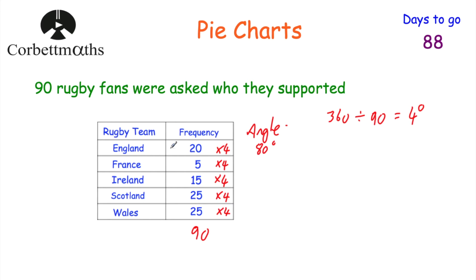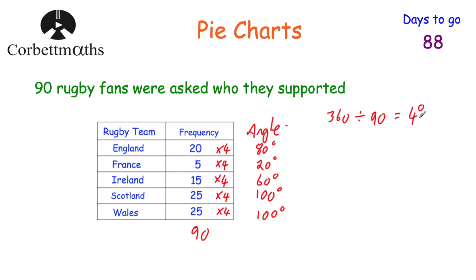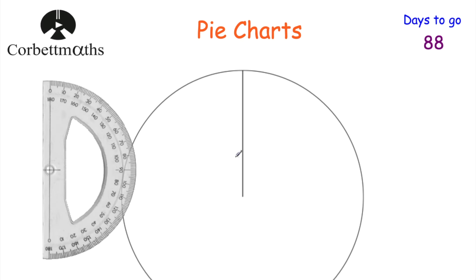20 multiplied by 4 is equal to 80 degrees for England. France: 5 times 4 is 20 degrees. Ireland: 15 times 4 is 60 degrees. Scotland: 25 times 4 is 100 degrees. Wales: 25 times 4 is 100 degrees. We can check by adding those angles — 100 plus 100 is 200, plus 60 is 260, plus 20 is 280, plus 80 is 360. Fantastic!